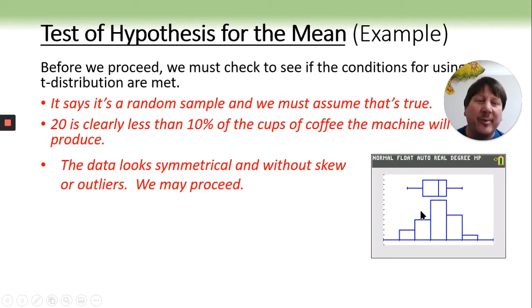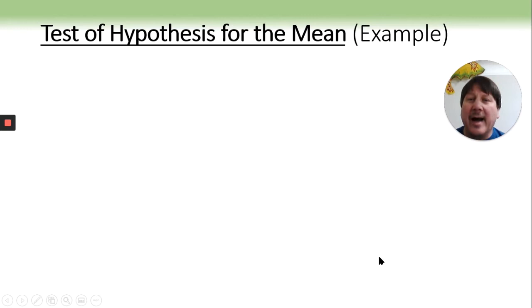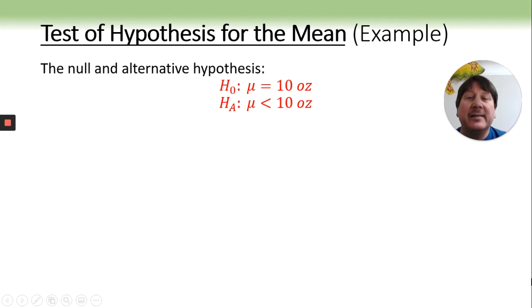Hypothesis for the mean. So, first thing is our null and alternative hypothesis. Of course, we have mu's out here because we're not talking about proportions, we're talking about means. Their claim was that it would produce 10 ounces. And we're checking to see if they are shortchanging us or if it's just random chance.